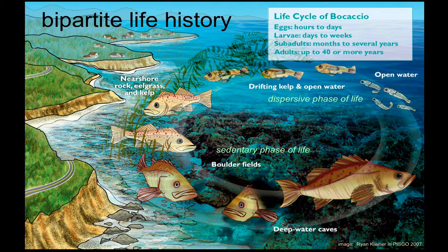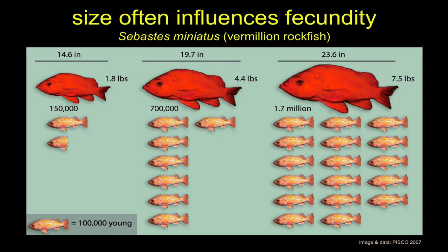Another key thing about many marine species, particularly fish, is that reproductive output — the number of new individuals potentially entering the population — is not linearly related to body size. Here we have a vermilion rockfish with total length on the top, from the tip of the nose to the end of the tail, versus the number of babies that could be produced in a given year. The individual on the right has 17 times more potential reproductive output than the individual on the left.